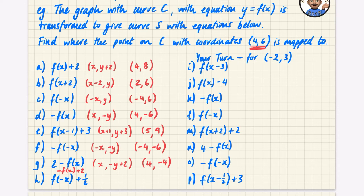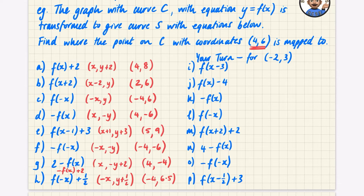For the last transformation, something does change: the x coordinate gets negated, but the y coordinate has an extra half added to it. So negating x gives -4, and adding half to the y gives 6.5. Now I want you to have a go at all of these transformations using the original coordinate (-2, 3) instead of (4, 6). Pause the video and have a go.